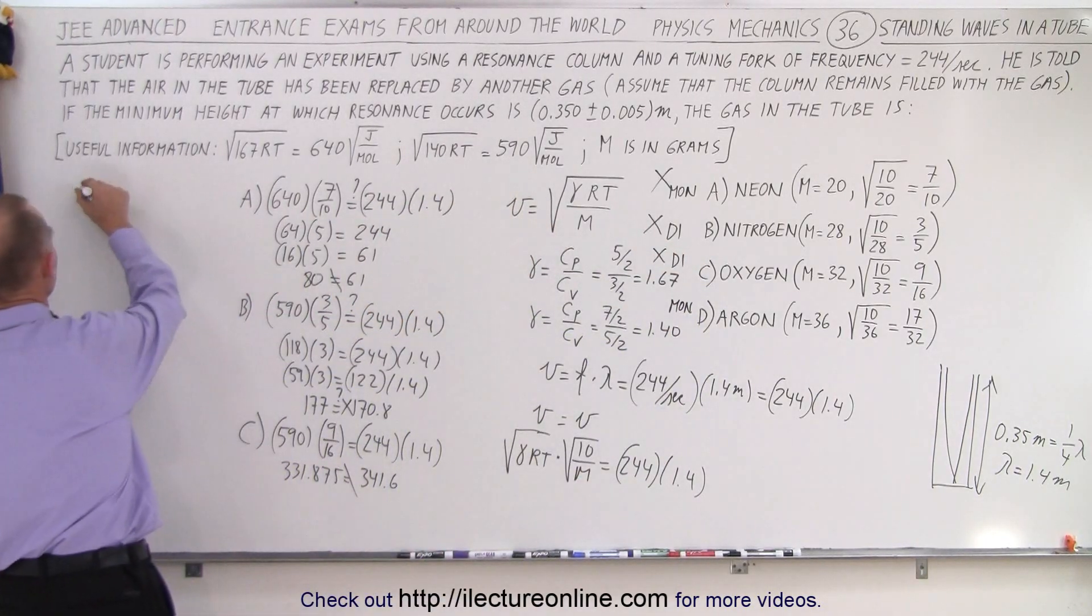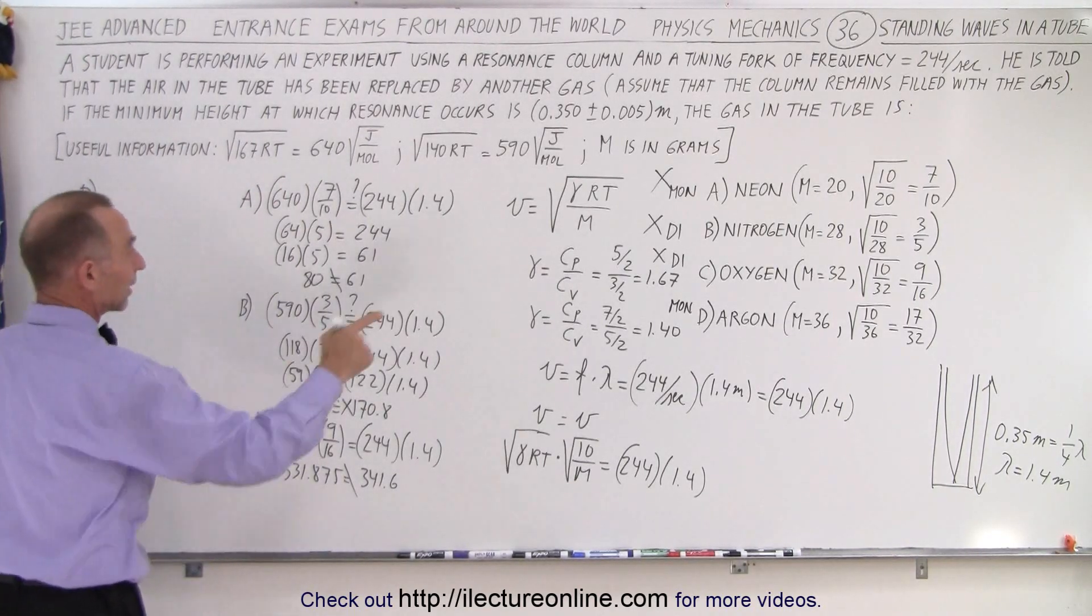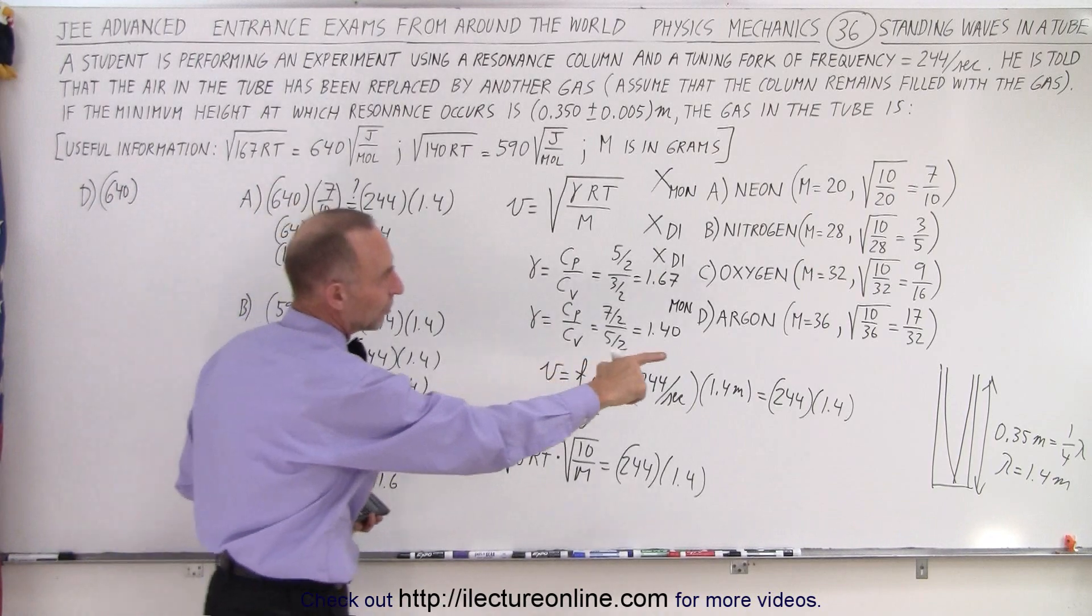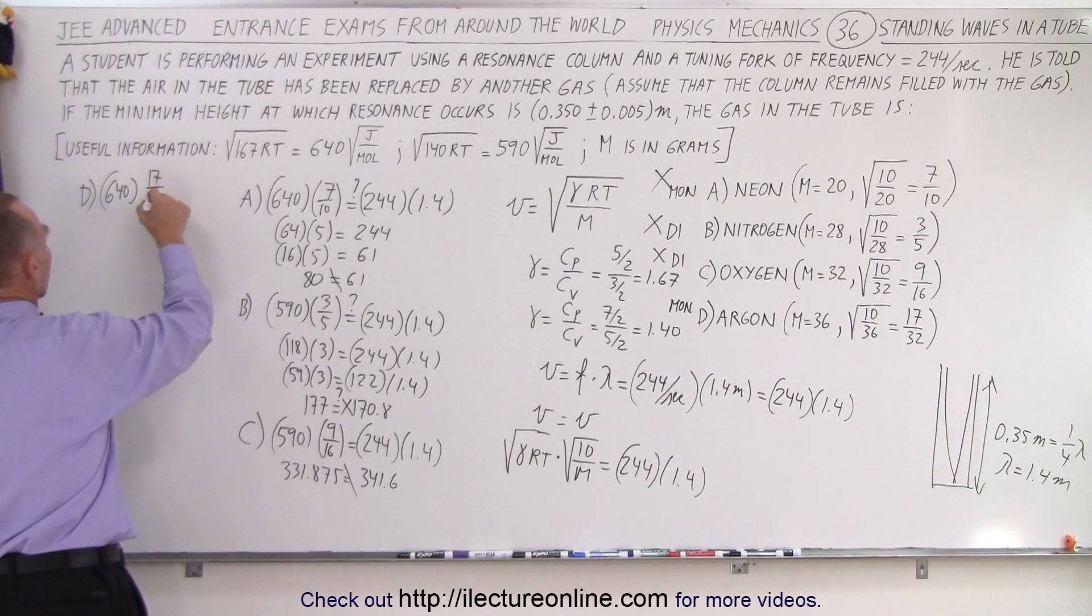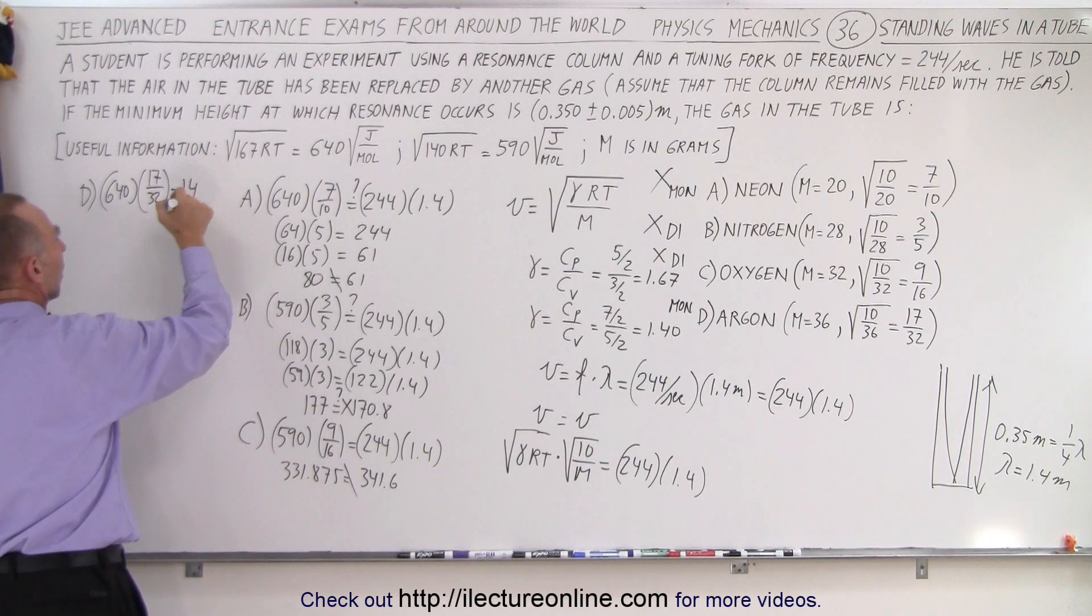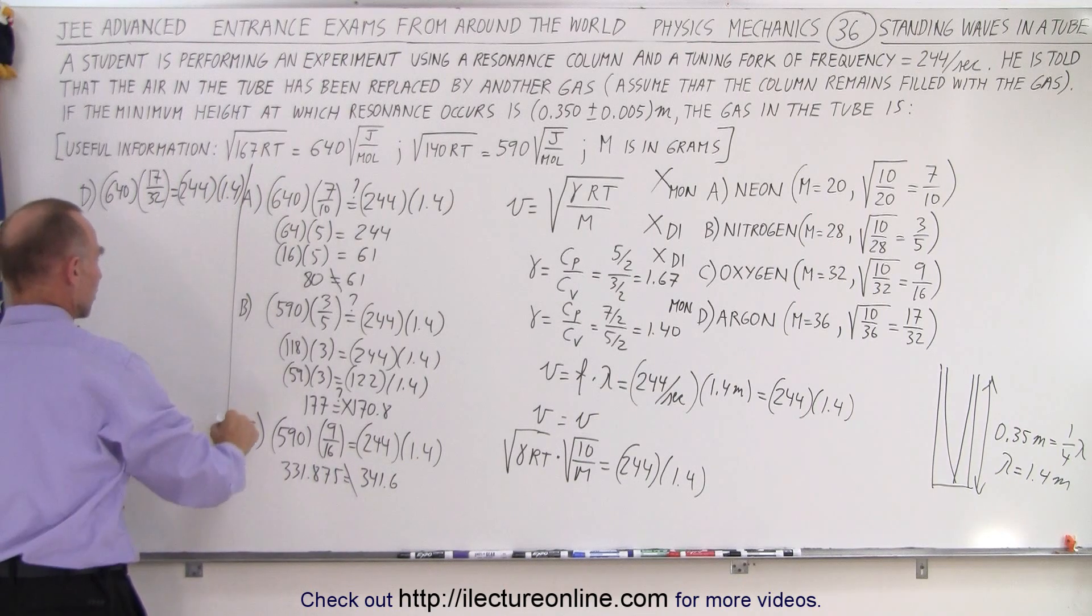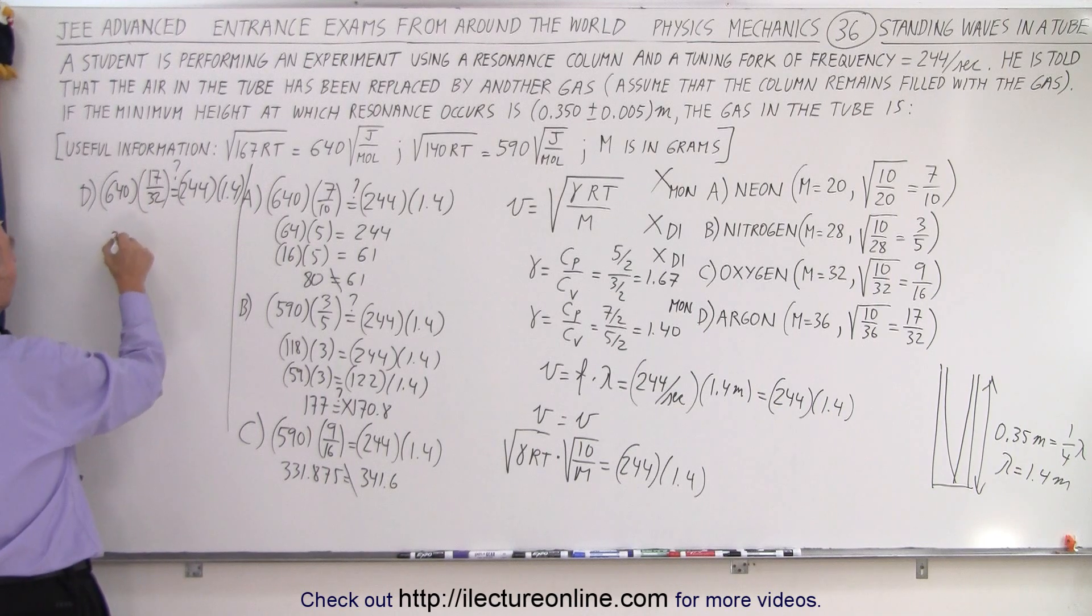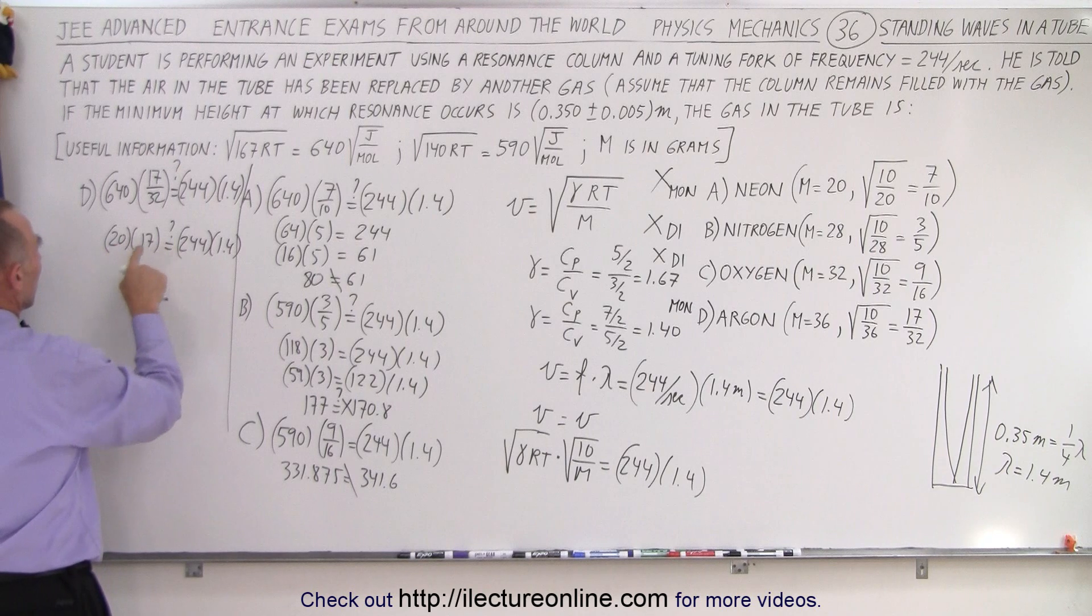And then finally, we go for D. We struck out A, B, and C. D is probably the correct answer. We're dealing with a monatomic molecule. So we go back to 640. Multiply that times the square root of 10 over 40, which is 17 over 32. And that equals 244 times 1.4.